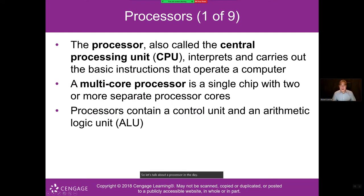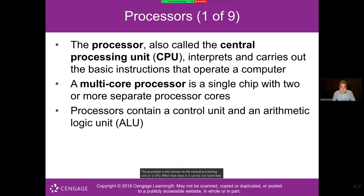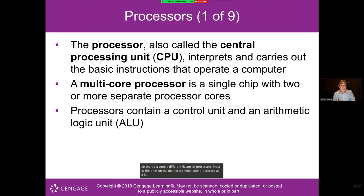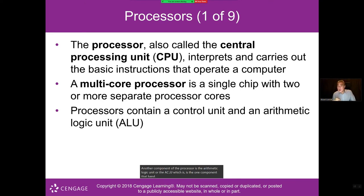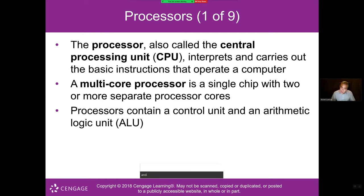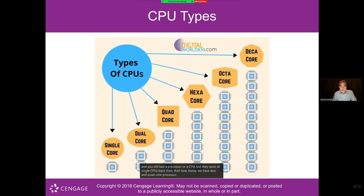The processor, also known as the CPU or central processing unit, carries out basic instructions that operate your computer — communicating with your keyboard, mouse, printer, monitor, applications, and internet connections. Most processors on the market are multi-core, meaning two, four, or more cores in one chip. Another component is the arithmetic logic unit or ALU, which handles all math functions. In the past, math was handled by a separate math coprocessor, but now we have dual and quad core processors.